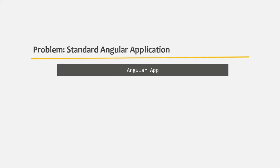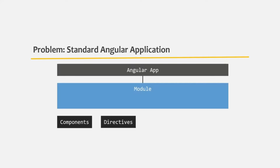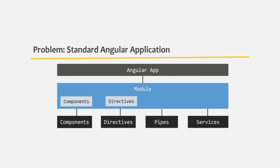When we create an Angular application, we need to write a lot of boilerplate code. For example, when we create a new component or a directive, we need to declare it in the NgModule of the module class so that Angular knows about them. In the same way, when we create a service, a pipe, or when we define a route, we need to add them in the NgModule of a module class. If we have other modules in our Angular application, we also need to import or export them within the modules. And if we forget to do it, our Angular application will not work properly, and we might get some runtime errors.